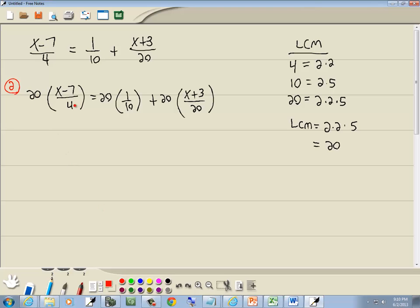Well, 20 and 4 are both divisible by 4. 4 divided by 4 is 1, 20 divided by 4 is 5. 10 and 20 are both divisible by 10. 10 divided by 10 is 1, 20 divided by 10 is 2. And 20 and 20 both divisible by 20. 20 divided by 20 is 1, 20 divided by 20 is 1.